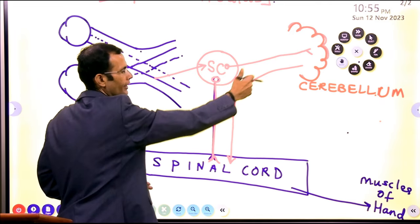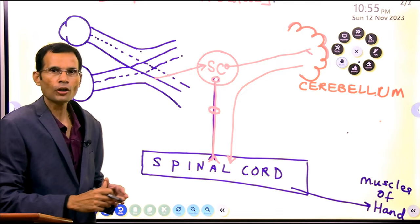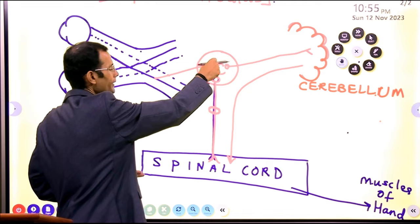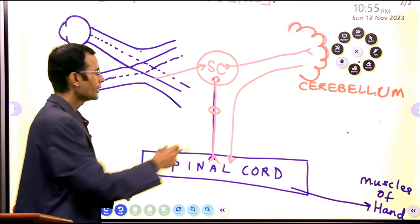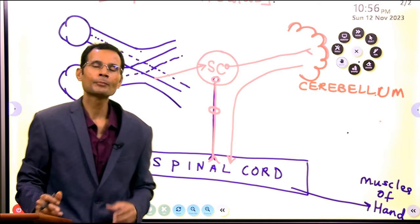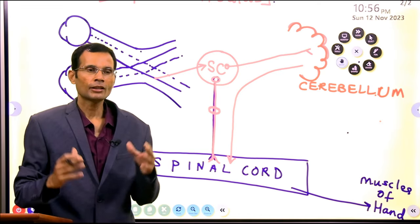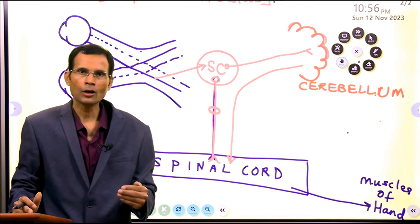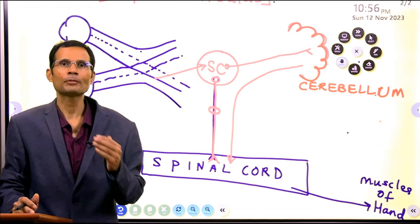Of course, this cerebellum sending signals to the spinal cord is working in close association with another tract which is called as tectospinal tract. Tectospinal tract and the cerebellar outputs going to the hand muscles, they are going to have an excellent coordination of hand muscles. That is how the eye-hand coordination is performed.